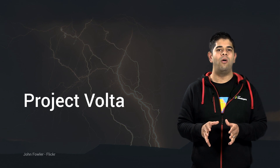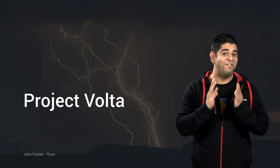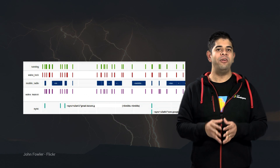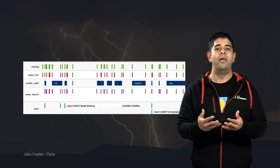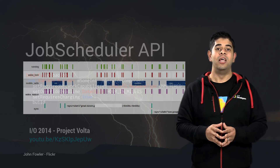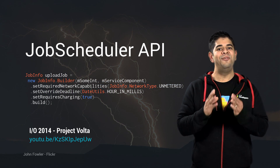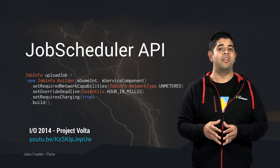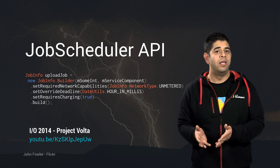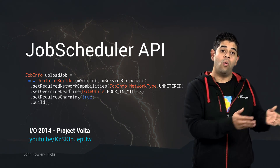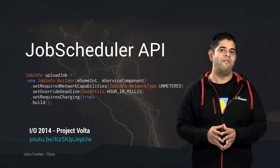Another cool initiative is Project Volta, which focuses on improving battery life and has resulted in power optimizations across the platform. These are new tools to help your app run efficiently and conserve power. BatteryHistorian, a tool included in the SDK, lets you visualize power events over time and understand how your app is using power. The JobScheduler API lets you minimize battery impact by setting the conditions under which your background tasks and other jobs should run, such as when the device is idle, connected to an unmetered network, or to a charger. The JobScheduler is one of my favorite new APIs.